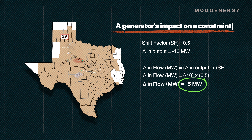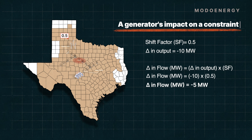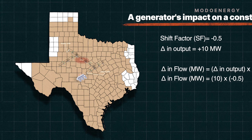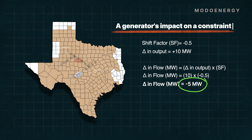Now imagine a generator on the import side of the constraint. This generator might have a shift factor of negative 0.5. If it increases its output by 10 MW, the flow across the constraint would decrease by 5 MW.